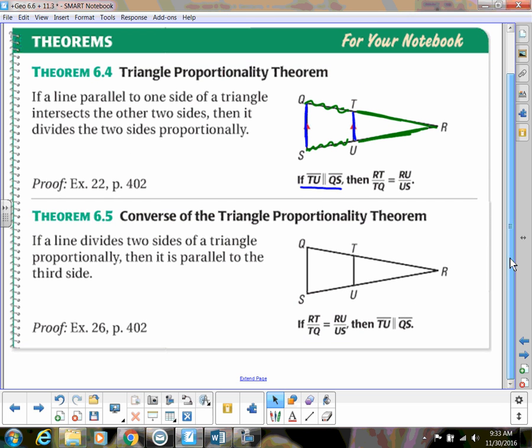The converse of that, then, is we would just switch the if and then. So if I know that RT over TQ is equal to RU over US, so if I know those sides are proportional, then I would know these two lines are parallel. So this converse is another way to show that lines are parallel, whereas the first one is a way to show that sides are proportional.